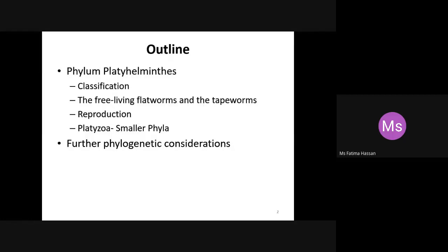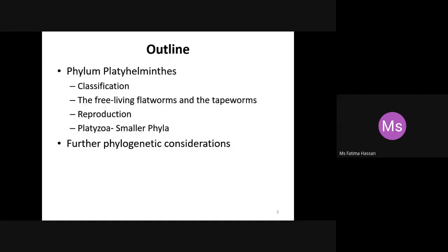The different organism types or forms, which are free-living flatworms or tapeworms, we will discuss in this unit. Then, the reproductive system, the cell types or body structure, we will discuss. And the smaller phyla or clades, which we call Phylum Platyhelminthes, which fall under this group, we will discuss. Then we will discuss further phylogenetic or genetic considerations, including molecular biology and different evidences.